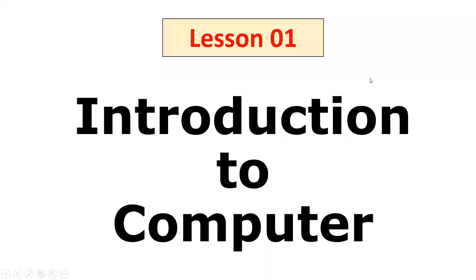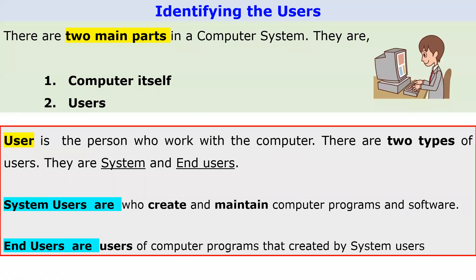If we consider a computer system, we can identify two separate sections. The first thing: we identify the computer as a system. If it is a computer system, there are two major parts. The first one is the computer itself. You want to become familiar with the computer itself — there are different devices attached to the computer system. The second part is users: the person who works with the computer. Those are known as users.